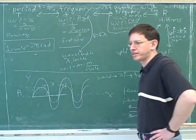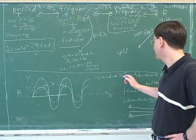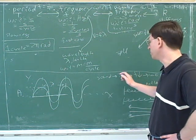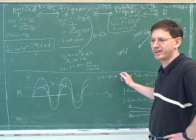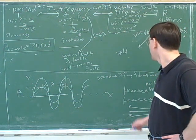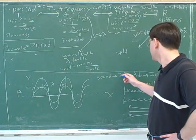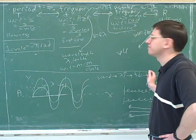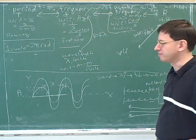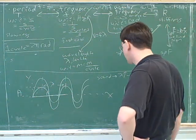Frequency and wavelength are measures of pitch. Both frequency and wavelength kind of measure the pitch, because they both move together. Any time you change wavelength, you have to change the frequency. A big wavelength means the same as a low frequency, a low pitch. And a big amplitude means a loud wave. So it's good to know what those things mean.